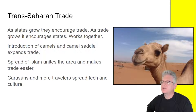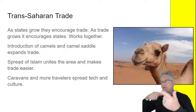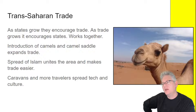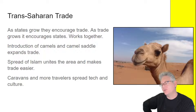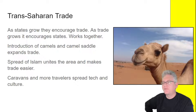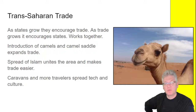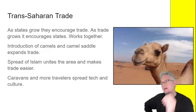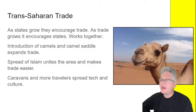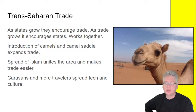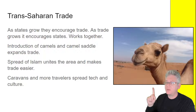As states grow they encourage trade, and as trade grows it encourages states — a feedback loop. A small settlement attracts trade, trade brings more people, more people demand more trade, and it builds on itself. Camels and camel saddles helped expand trade in this area. The spread of Islam — and in other places Buddhism — united regions through common culture and language like Arabic, making trade easier. Caravans and more travelers spread technology and culture. There's a little camel right above me — they look cute, but they're really mean.